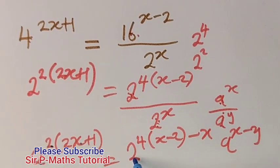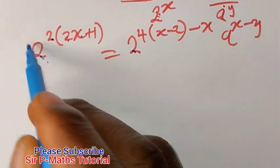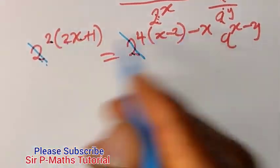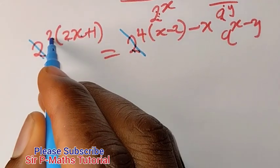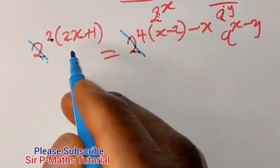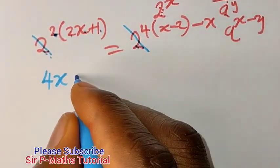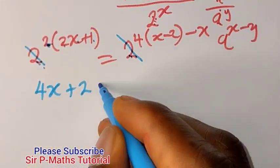Now the bases are equal on both parts so we can cancel both of them. Having cancelled we write out the powers. But let's open the brackets. 2 times 2x will give me 4x. 2 times 1 will give me 2 equal to.